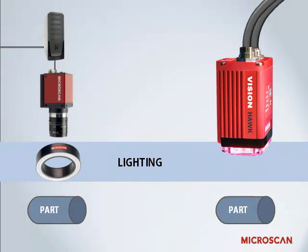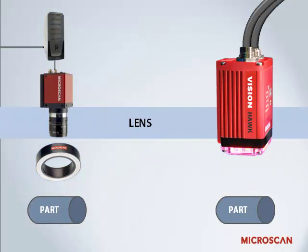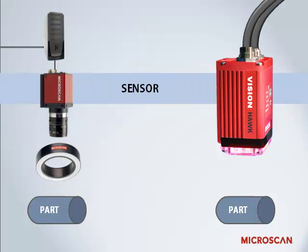Lighting is a critical piece because it illuminates the part to be inspected, allowing its features to stand out so that the camera can clearly see them. Next, you have the lens, which captures the image and presents it to the sensor in the form of light. The sensor in a machine vision camera converts this light into a digital image, which is then sent to the processor for analysis.